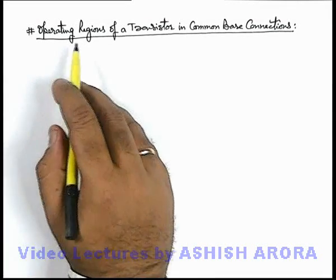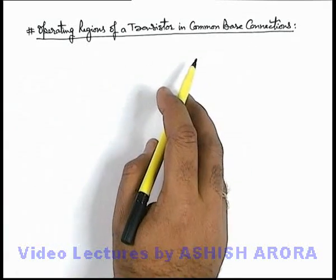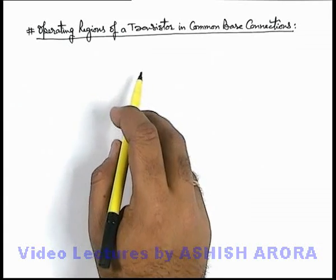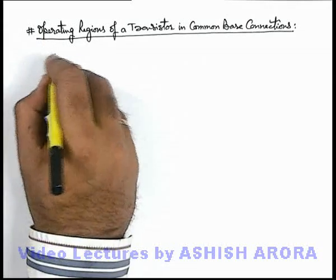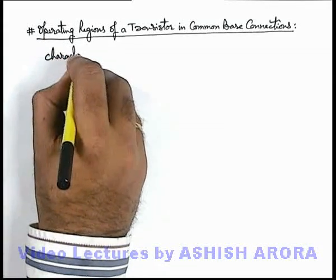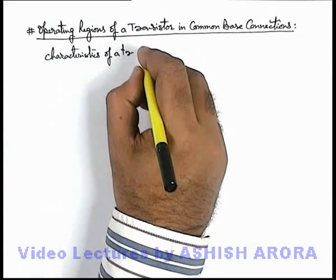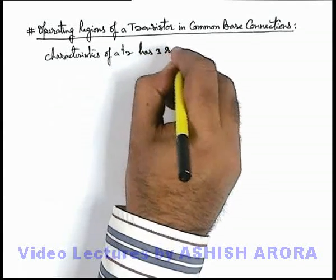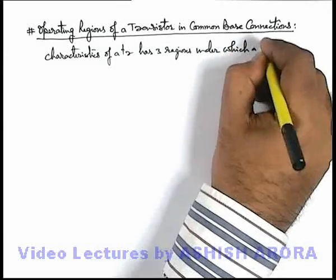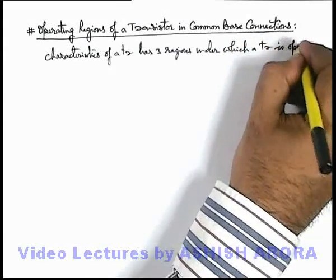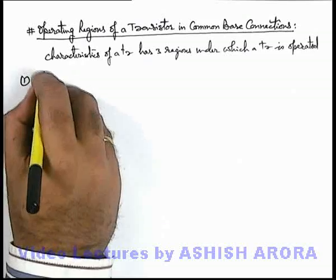Let us discuss the operating regions of a transistor in common base connection, which we have already discussed while we were discussing the output characteristics of a transistor in common base connection. Let's discuss once again. The characteristics of a transistor has 3 regions under which a transistor is operated. The very first one we call the active region.